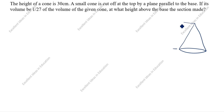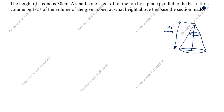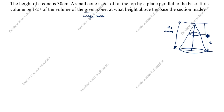The height of the cone is given as 30 centimeters, so we will take this as the big H. Next, a small cone is cut off at the top by a plane parallel to the base. Now we will join the line. If its volume be 1/27 of the volume of the given larger cone, at what height above the base is the section made? We need to find this height above the base, which we will take as x. The small cone height we will take as small h.